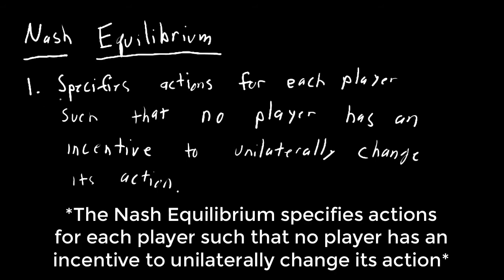We're going to go through and discuss this definition term by term. What do I mean by specifies actions? Remember, a game is made up of players, all of the possible actions they can take, and the utility functions or the payoffs. What a Nash Equilibrium does is that it picks an action of the many possible actions for each player.